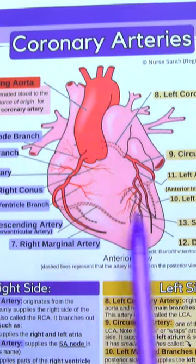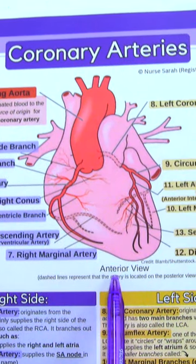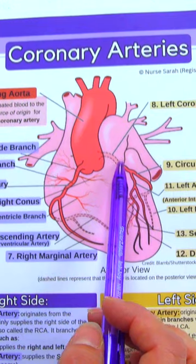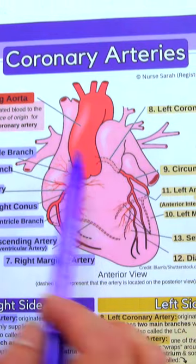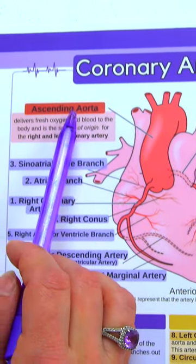Let's go over the anatomy of the coronary arteries. This is an anterior view of the heart. You have a right coronary and a left coronary artery. They both come out of the ascending aorta.